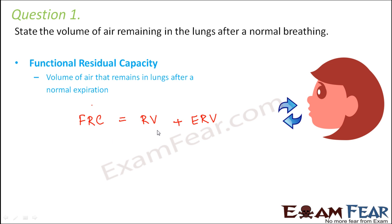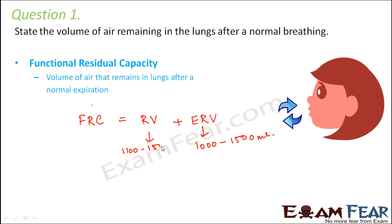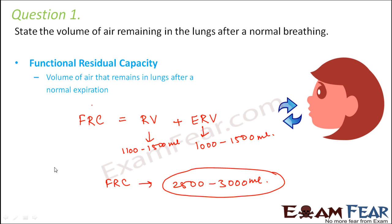Normally the expiratory reserve volume is around 1000 to 1500 milliliters for a healthy adult, and the residual volume is approximately 1100 to 1500 milliliters. So the functional residual capacity ranges between 2500 to 3000 milliliters — that is the approximate value for a healthy adult.